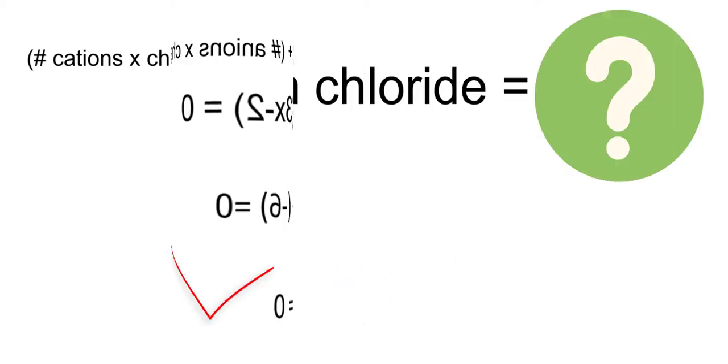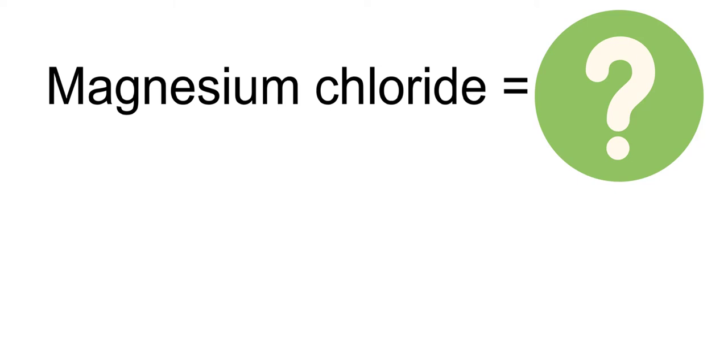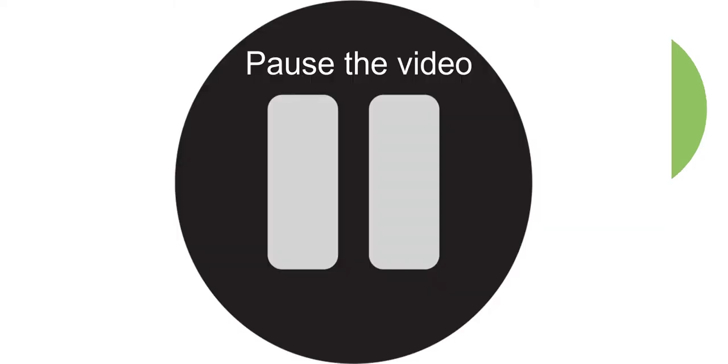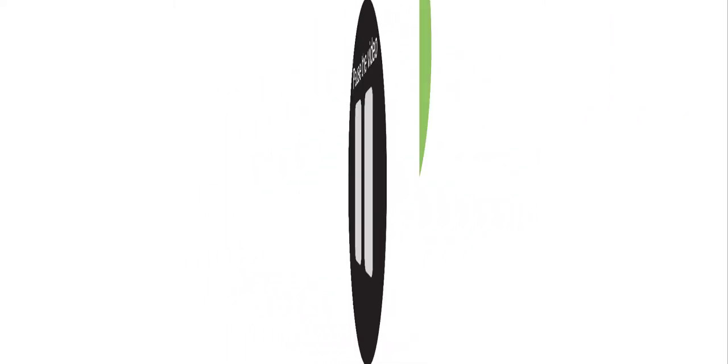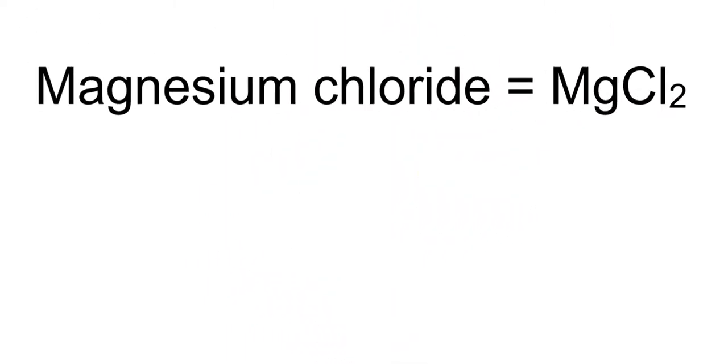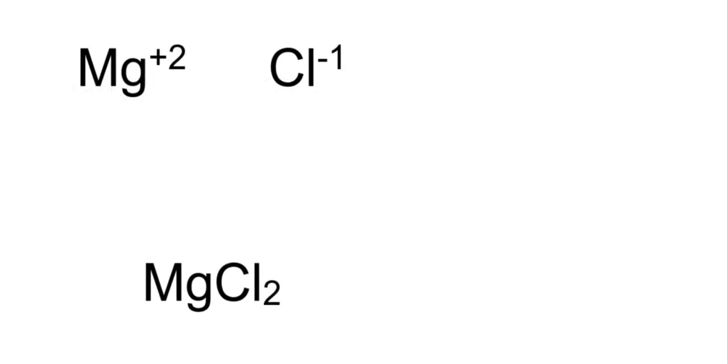Now it is your turn. Write the formula for magnesium chloride. Please pause the video to give yourself time to do this. Did you get MgCl2? Magnesium has a +2 charge and chloride has a -1 charge.